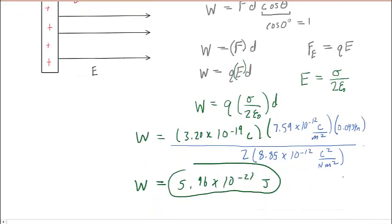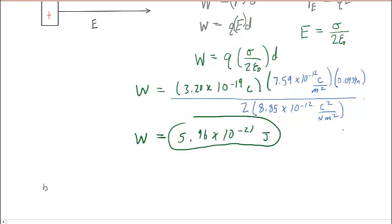Now, let's recall that the potential difference between two points, which we might write as VF minus VI, is defined as negative the work done by the electric field, divided by the charge.